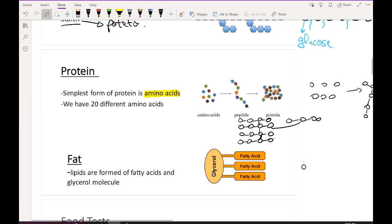Fat, or lipids, are formed of fatty acids and glycerol. So fat or lipids are formed of one glycerol and three chains of fatty acids.